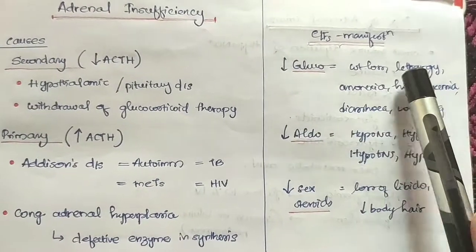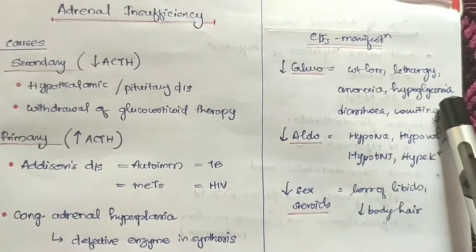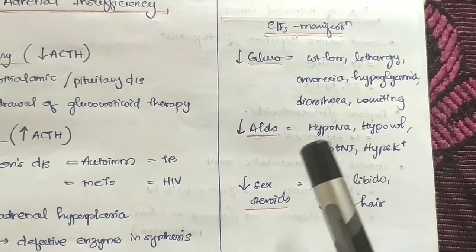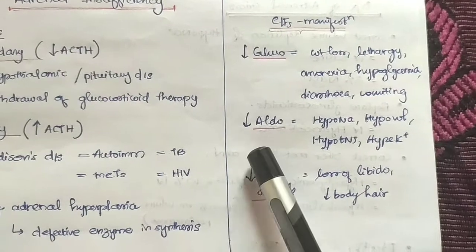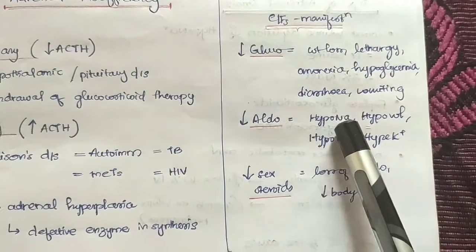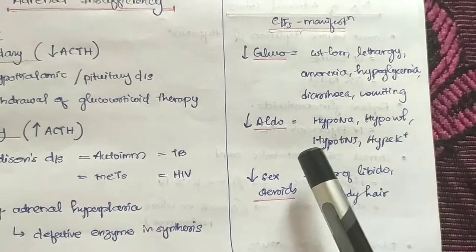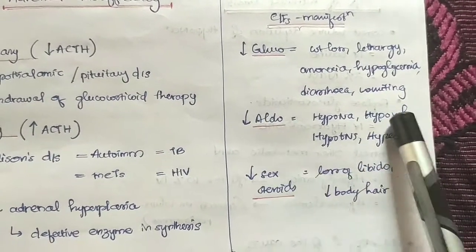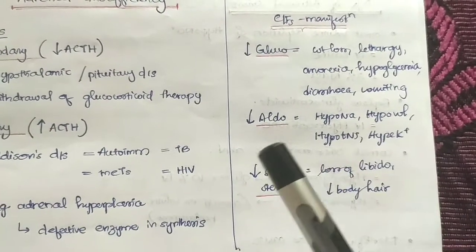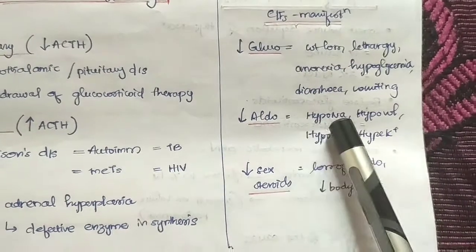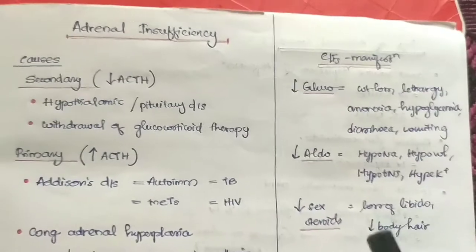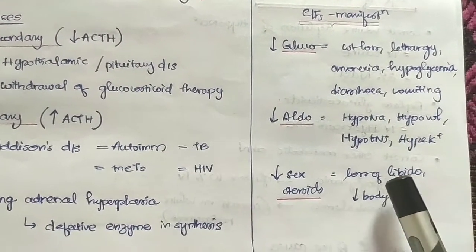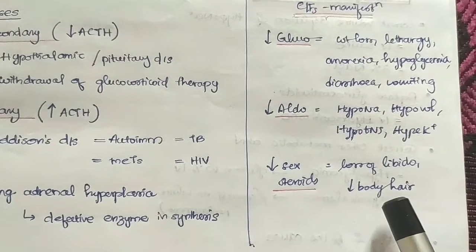All hormone levels are reduced in adrenal insufficiency. Clinical features include weight loss, lethargy, anorexia, hypoglycemia, diarrhea, and vomiting. Reduced aldosterone levels lead to hyponatremia, hypovolemia, hypotension, and hyperkalemia. Reduced sex steroids result in loss of libido and decreased body hair.